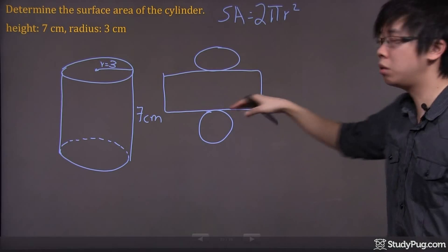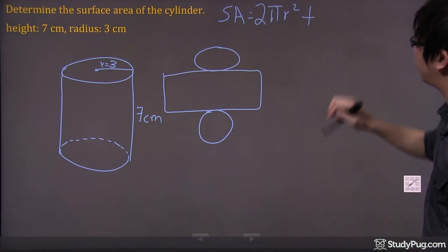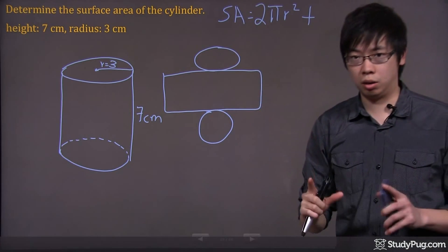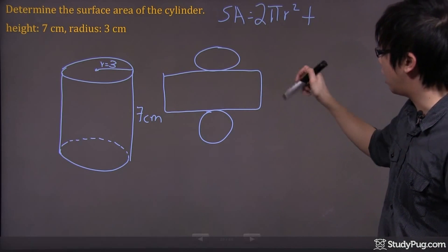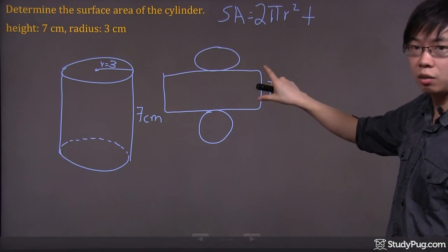Now, what about the one in the middle? The one in the middle, you have to add on top of that. It happens to be a rectangle. We already know the height here is 7, because that is the height right there.